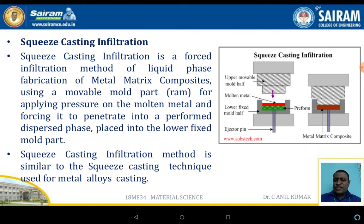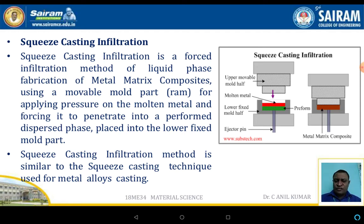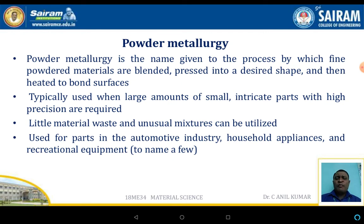Squeeze casting, or squeeze infiltration, is another technique adopted for MMCs. It is a forced infiltration method of liquid phase fabrication using a movable mold part called a RAM for applying pressure on the molten metal, forcing it to penetrate a dispersed phase placed into the lower fixed mold. It is similar to squeeze casting but used for metals, alloys, and MMC castings.